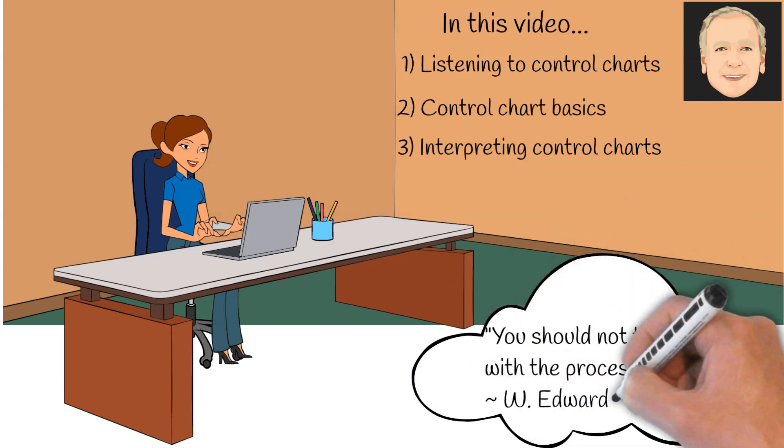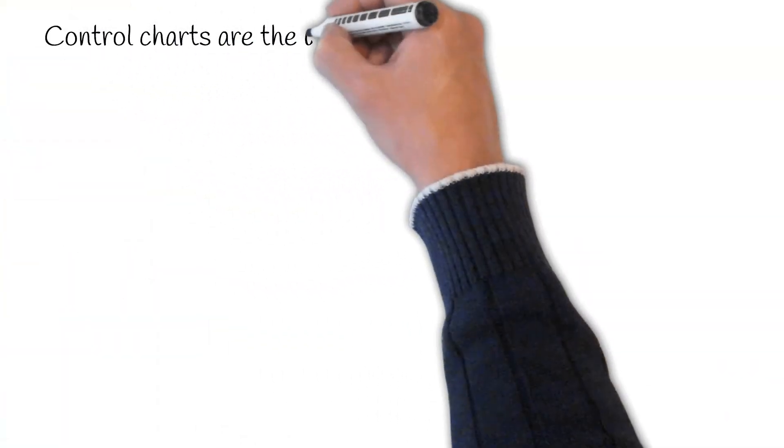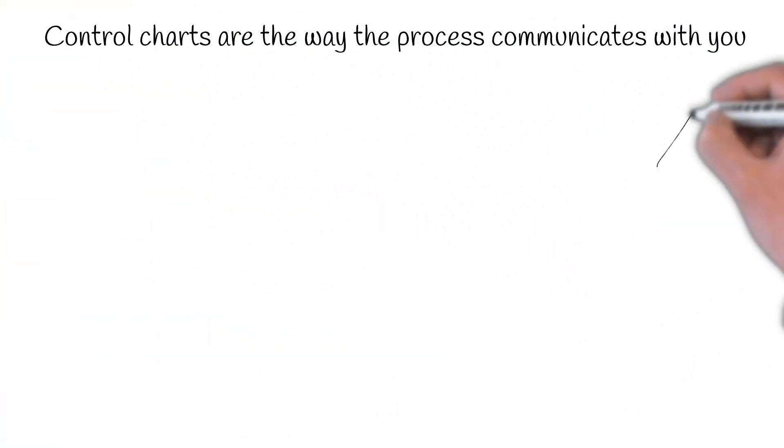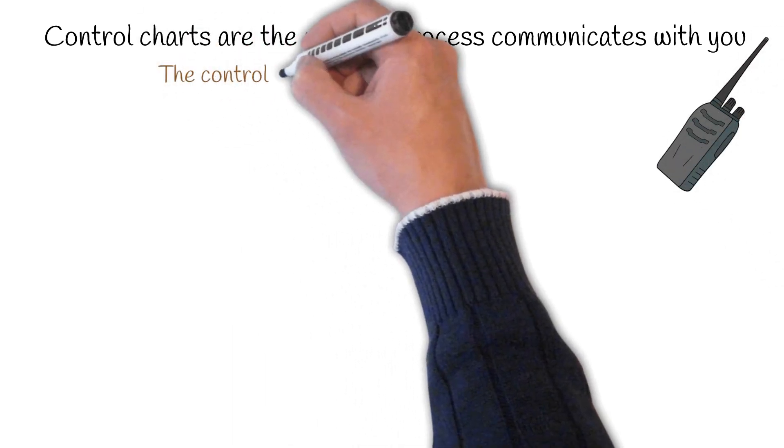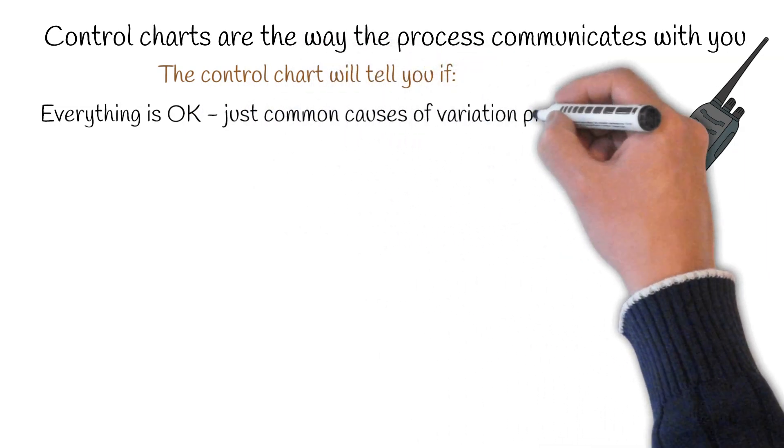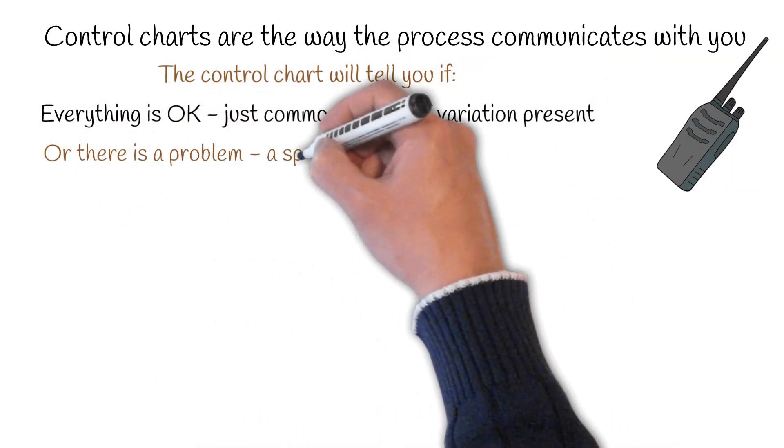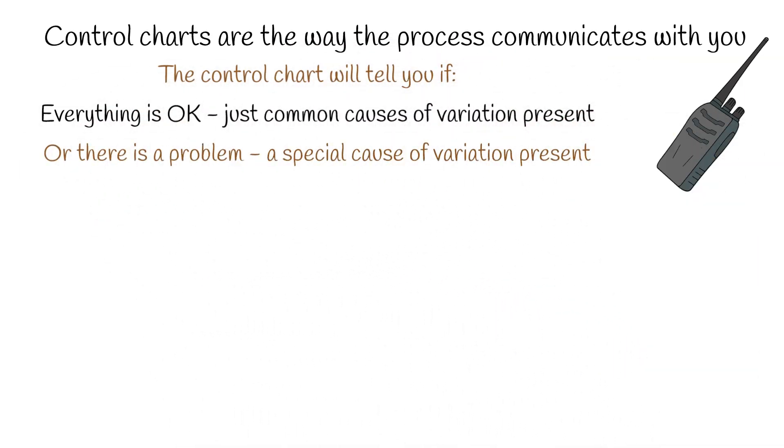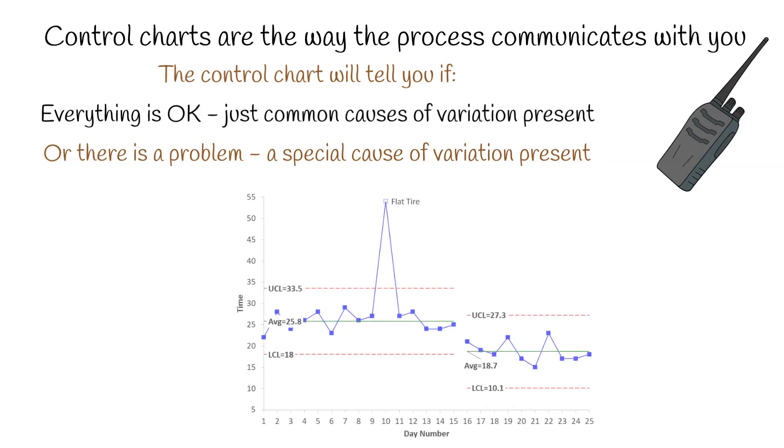Dr. Deming said you should not tamper with the process. And to avoid that, you have to know what your control chart's telling you. A control chart is the way the process communicates with you. The control chart will tell you one of two things: if everything's okay and you just have common causes of variation present, or if there's a problem, a special cause of variation.